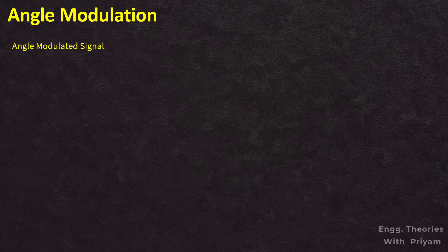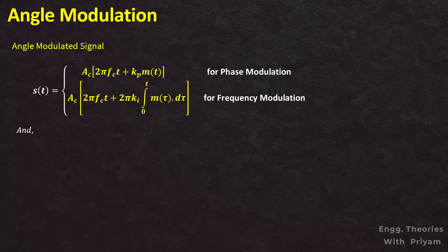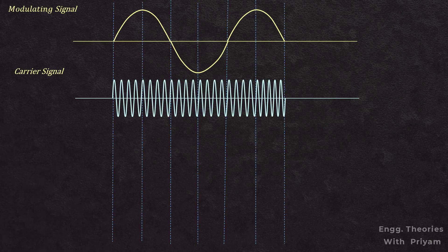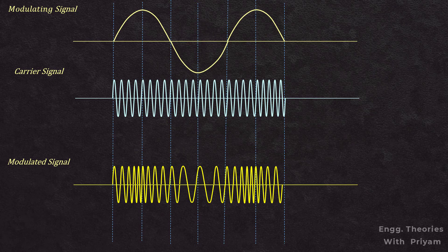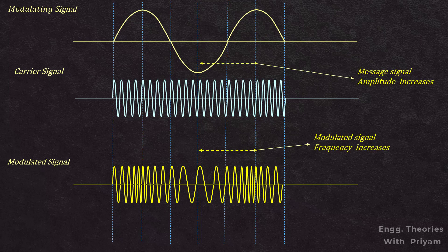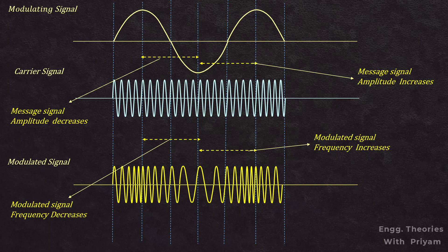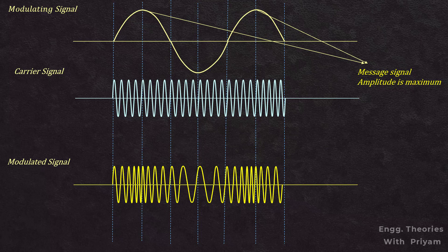In the previous lecture we saw the equations for phase modulation and frequency modulated signals. Now we will understand these two modulations graphically. First, we take a carrier signal and a sinusoidal modulating signal. According to the definition of frequency modulation, the instantaneous frequency f(t) of the frequency modulated signal is varied in linear proportion to the instantaneous amplitude of the modulating signal m(t). When the amplitude of the modulating signal increases, the frequency continues to increase.